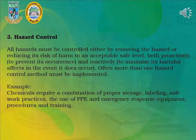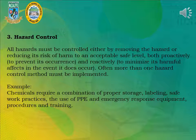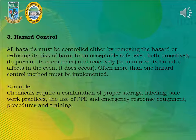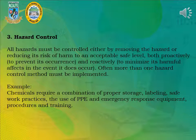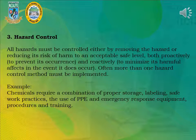3. Hazard Control. All hazards must be controlled either by removing the hazard or reducing its risk of harm to an acceptable safe level — both proactively to prevent its occurrence and reactively to minimize its harmful effects in the event it does occur. Often more than one hazard control method must be implemented. Example: Chemicals require a combination of proper storage, labeling, safe work practices, the use of PPE and emergency response equipment, procedures, and training.